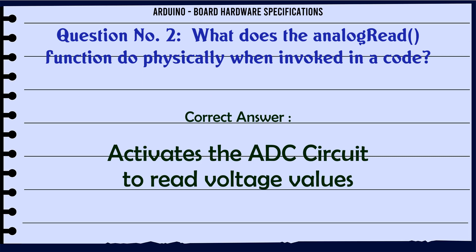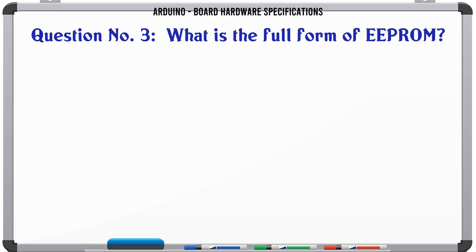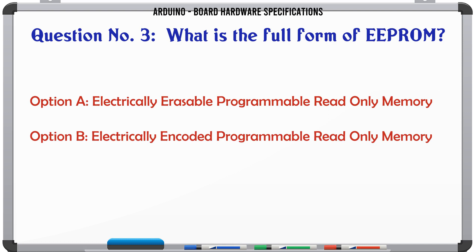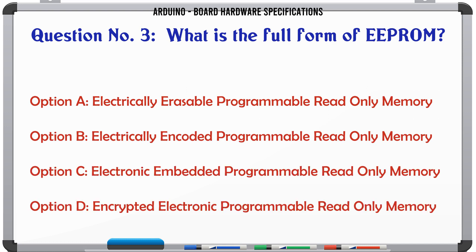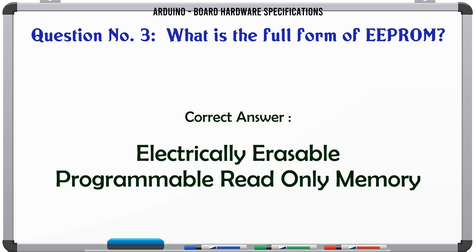What is the full form of EEPROM? A: Electrically erasable programmable read-only memory. B: Electrically encoded programmable read-only memory. C: Electronic embedded programmable read-only memory. D: Encrypted electronic programmable read-only memory. The correct answer is: Electrically erasable programmable read-only memory.